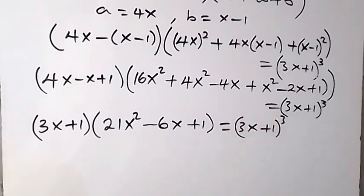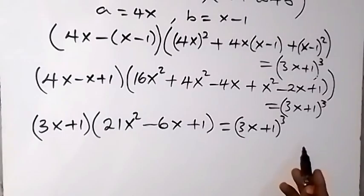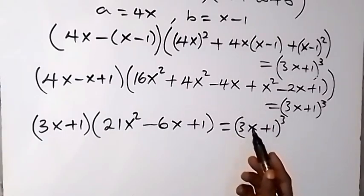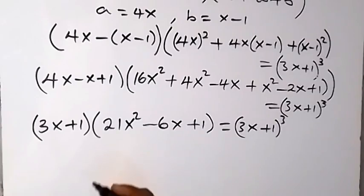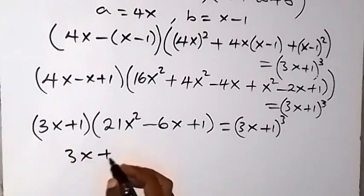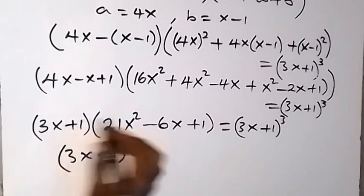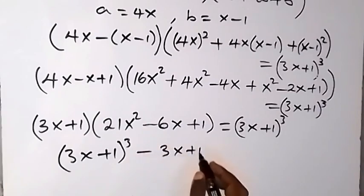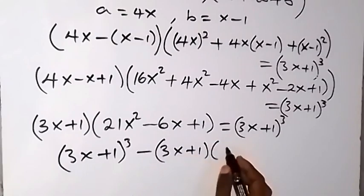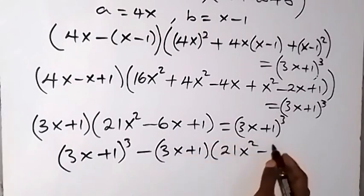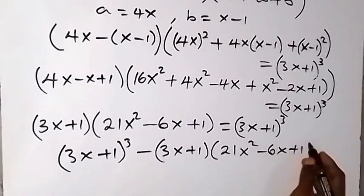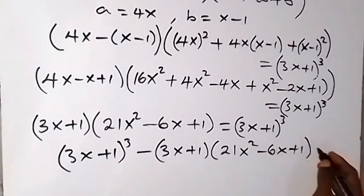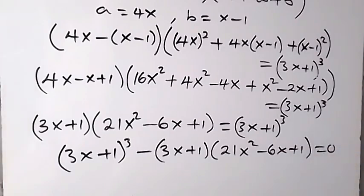We bring everything to one side. Writing the right-hand side first: (3x+1)³, then subtracting the left side, we have minus (3x+1)(21x² - 6x + 1), which equals 0. We can now factor out the common term.